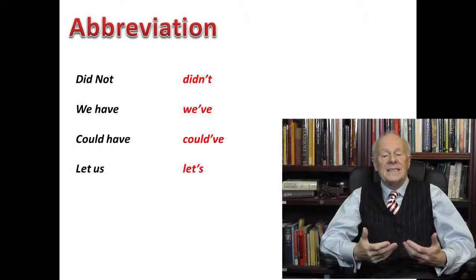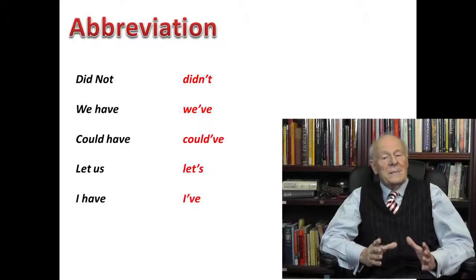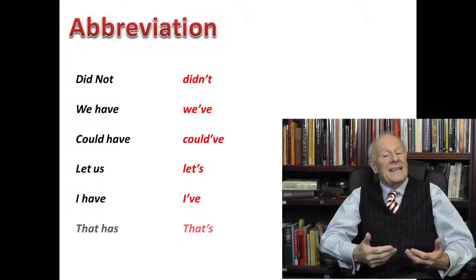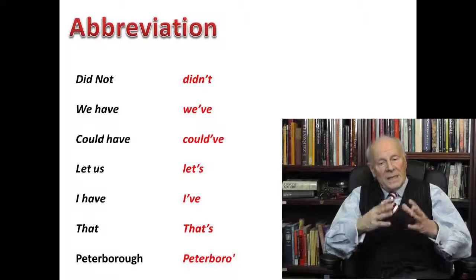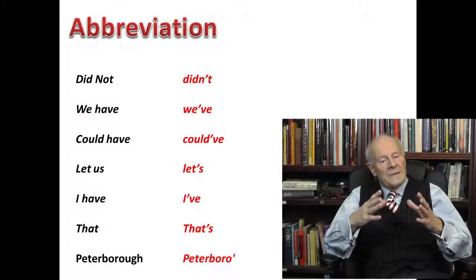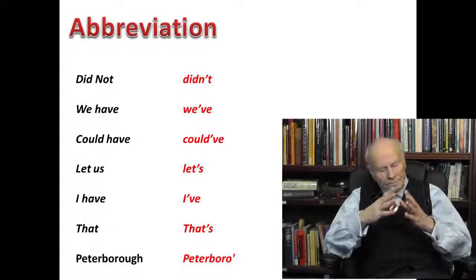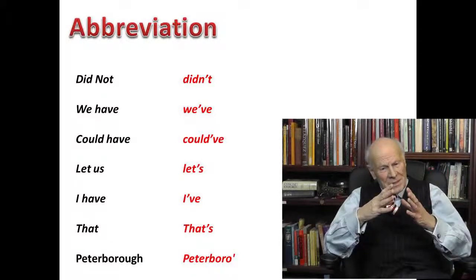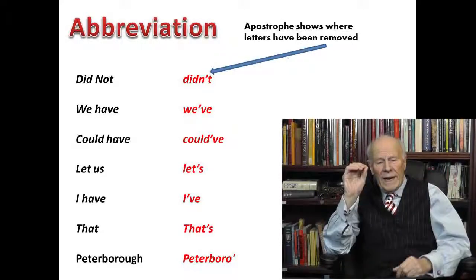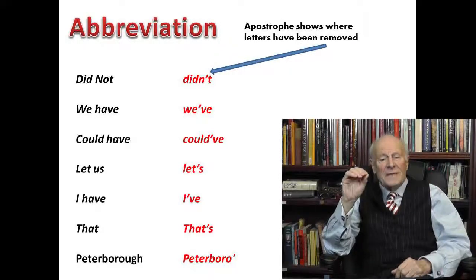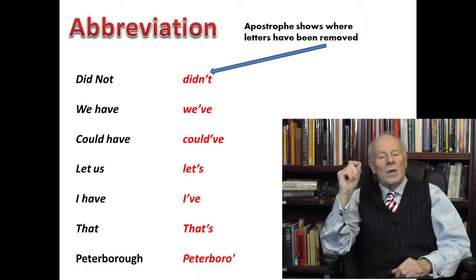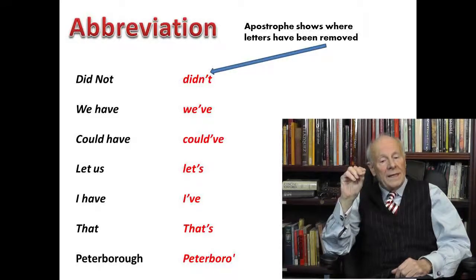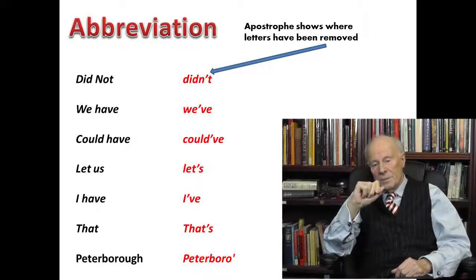'Lettuce' is abbreviated to 'let's'; 'I have' becomes 'I've'; 'that has' becomes 'that's'; the town Peterborough can be abbreviated to 'P'boro'. So our second rule is: whenever you remove letters from a word, or from two adjacent words, you use an apostrophe to show where the letters have been removed.